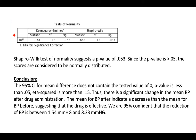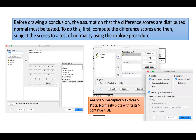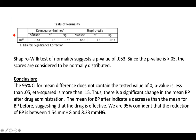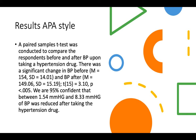How do we know there's a significant change in BP? Look back at your means. Before it's 154, after it's 149. There's a significant change — the BP dropped. We are 95% confident that the reduction in BP is between 1.54 and 8.33. This is the lower bound and upper bound of the 95% confidence interval.